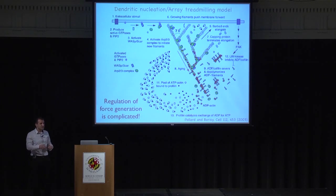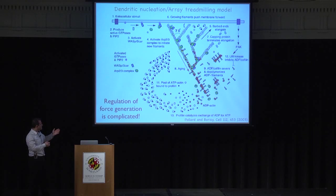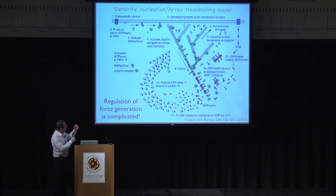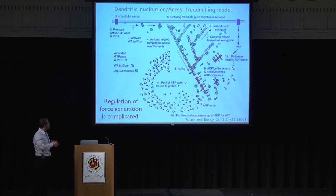Of course, we all hope there are some underlying simple principles and this complexity is just decoration, but at this point it's not clear if that's the case. This slide is a few years old, so there are probably a lot more players now. The main idea is that you see the actin molecules polymerizing and branching, and all these players control this polymerization — because you want your cell to go in one place and not another, and also to control cell shape.